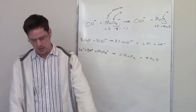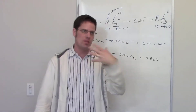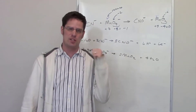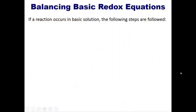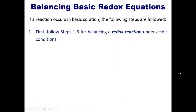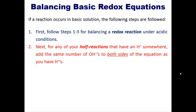We've completed steps one through three for acidic conditions. But remember, we're doing this under basic conditions. Returning to our steps for basic conditions: step two says for any half reaction that has H⁺, add the same number of OH⁻ to both sides of the equation as you have H⁺.